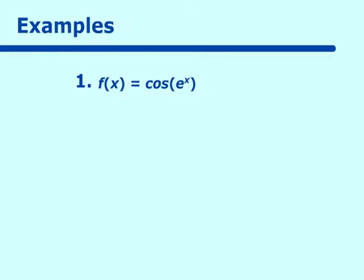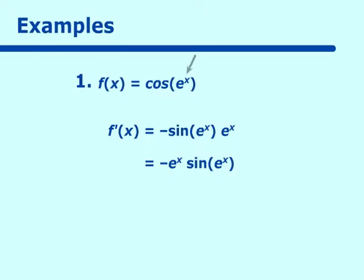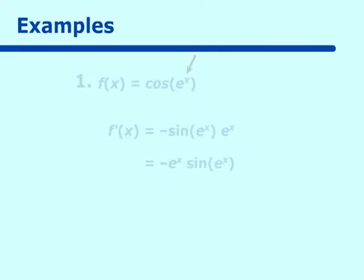So f prime of x equals the derivative of cosine, which is negative sine, and we carry along the e to the x. Then we take the derivative of the inside, which is e to the x, and the derivative of e to the x is e to the x. So our final answer, cleaned up, is negative e to the x times sine of e to the x. We took the derivative of the outside f function — cosine became negative sine — then went inside and took the derivative of e to the x, which was e to the x.